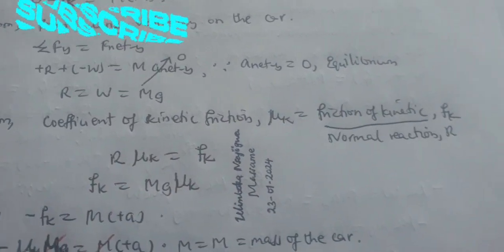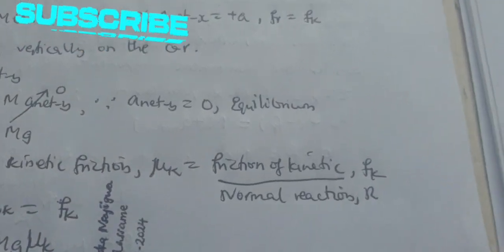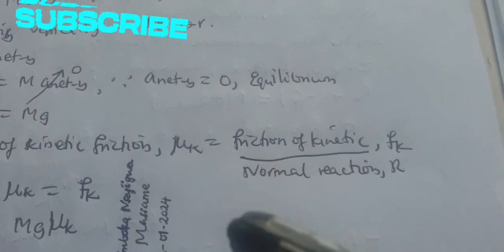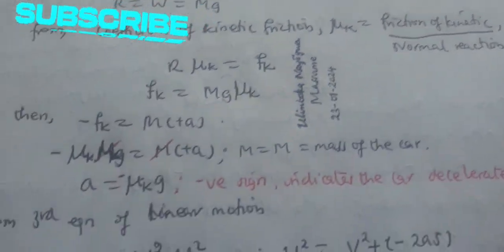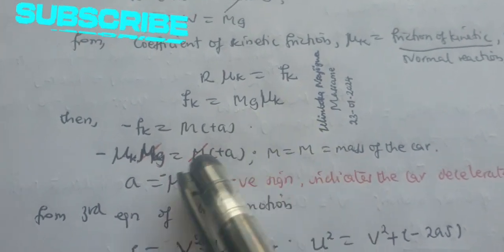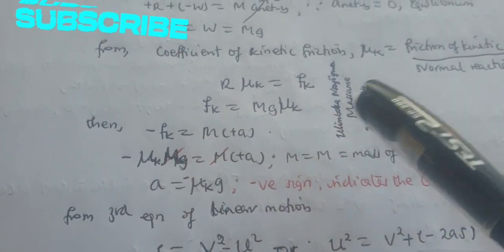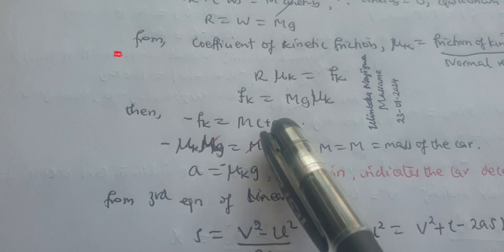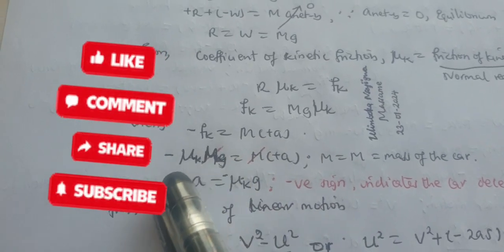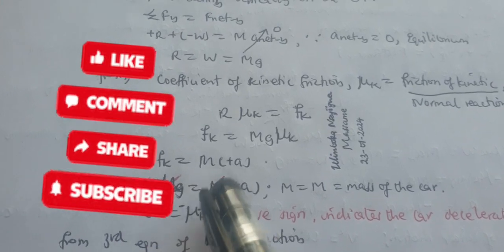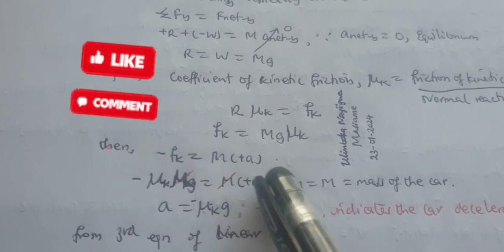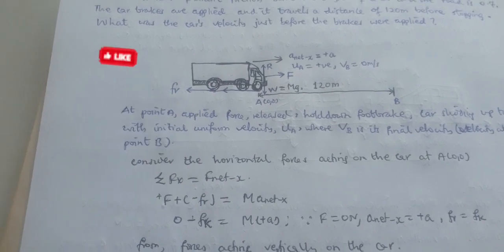From the coefficient of kinetic friction, from definition, μk equals Fk divided by normal reaction R. Then we make Fk the subject and substitute. We get negative μk times g equals mass times positive acceleration.